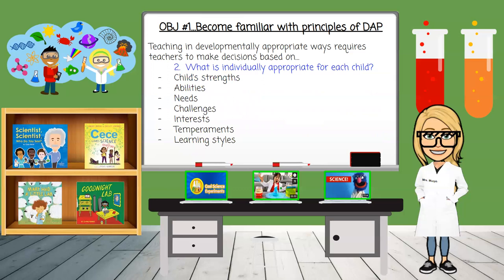Number two, teachers should make decisions based on what is individually appropriate for each child. Each child is an individual and develops in his or her own unique ways. Teachers need to know each child's strengths, abilities, needs, challenges, interests, temperaments, and learning styles. This can be done through time spent together, observation, assessment, work samples, documentation, and information from families and past teachers or programs.